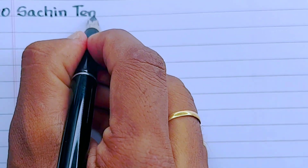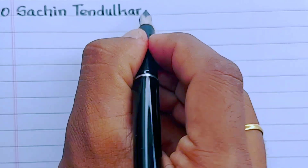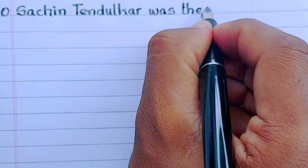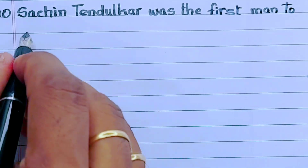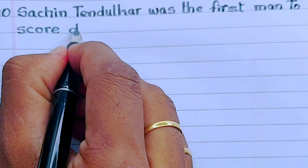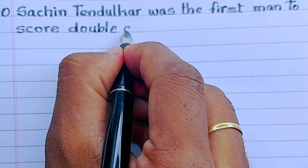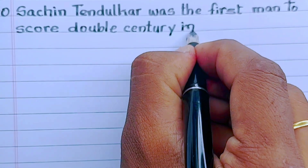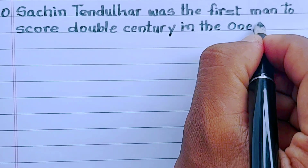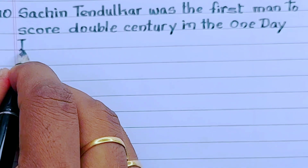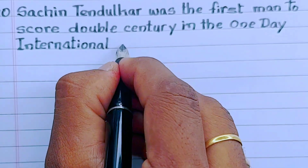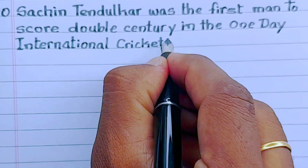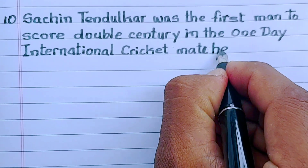10th point: Sachin Tendulkar was the first man to score a double century in one day international cricket matches.